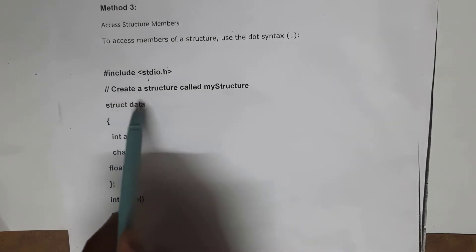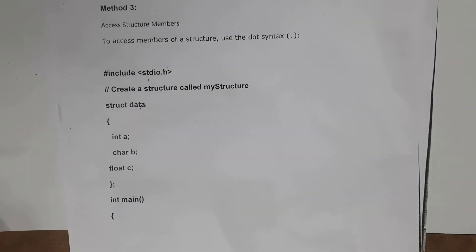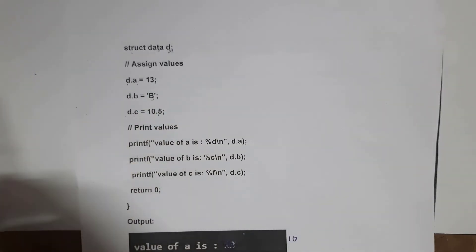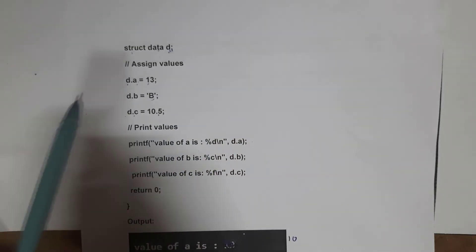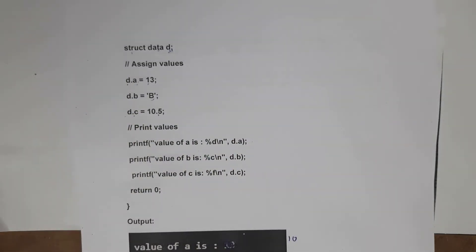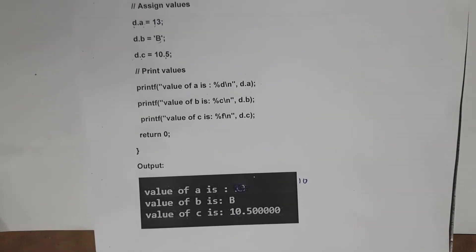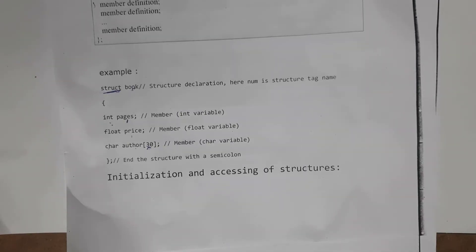This is the third way. The structure 'data' is declared outside main. Inside main, I declare 'struct data d', then assign values using dot notation: d.a = 13, d.b = 'b', d.c = 10.5. Then three printf functions print the values. Output: value of a is 10, b is b, c is 10.5. These are the three ways to assign values to structures.